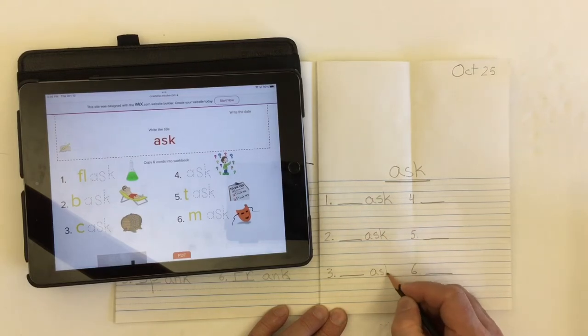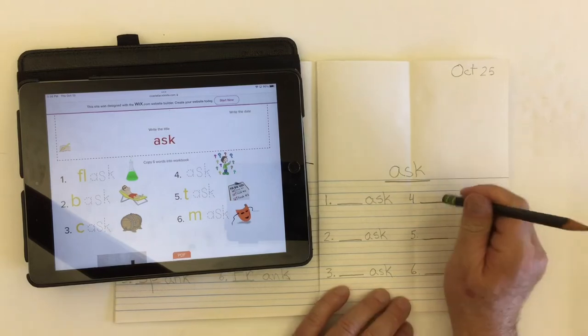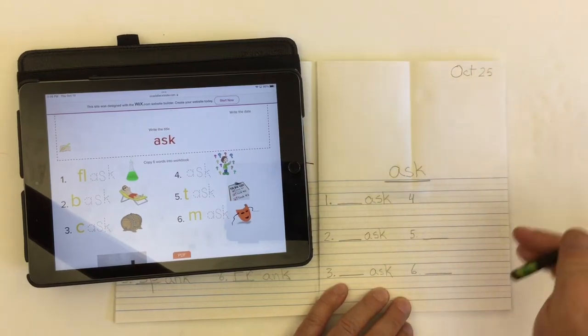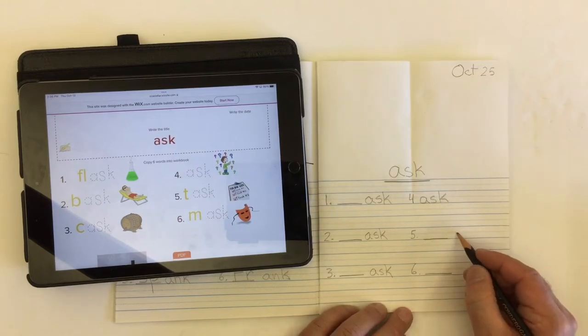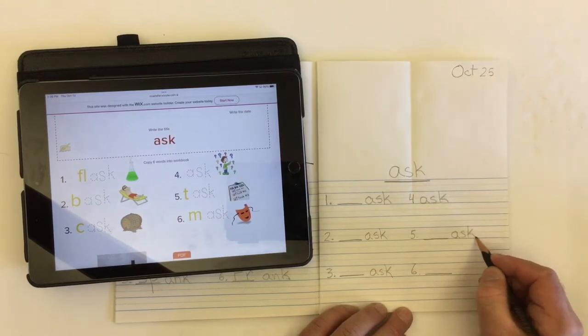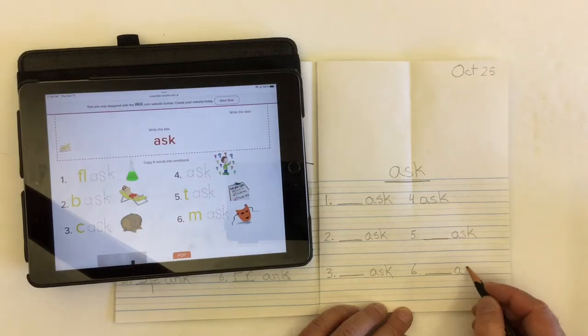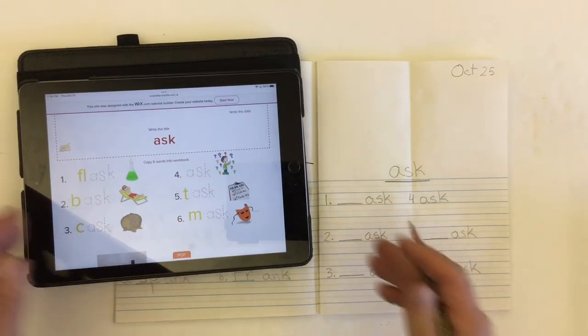In fact, number four, the whole word is A-S-K, like ask a question. Number five after the line A-S-K, and number six after the line A-S-K. Let's take a look at our words.